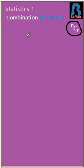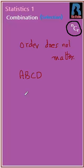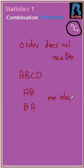Remember that in selection, order doesn't matter. For example, if from A, B, C, D we are taking two letters and we choose A and B, then whether we choose A and B or B and A, the selections are considered the same and counted only once. So this is one selection — order doesn't matter.